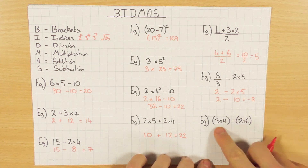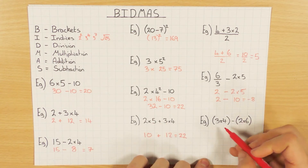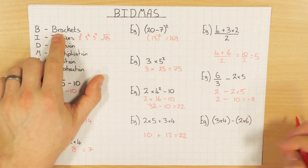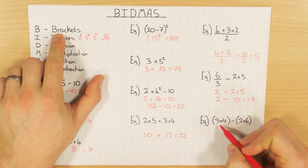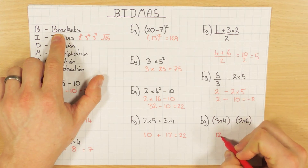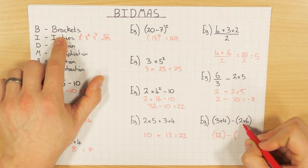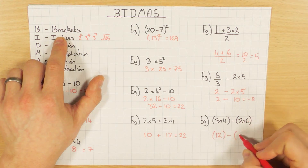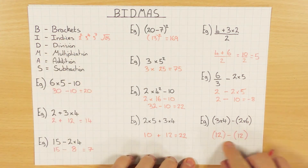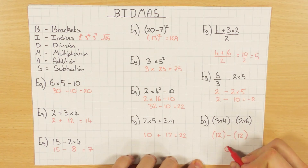This one is similar, but this time it's in brackets, which means I definitely have to do the brackets first. Inside the first bracket: 3 times 4 is 12. Inside the second bracket: 2 times 6 is 12. Then the subtraction: 12 minus 12 is 0.